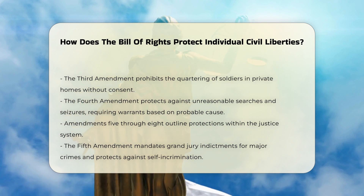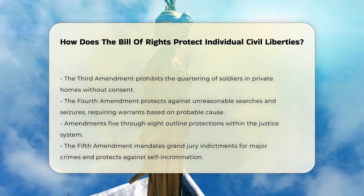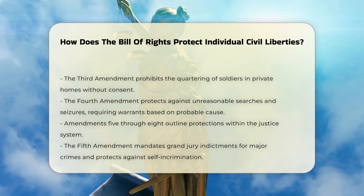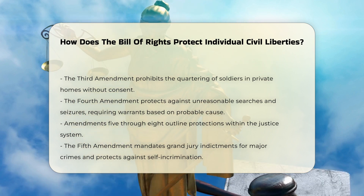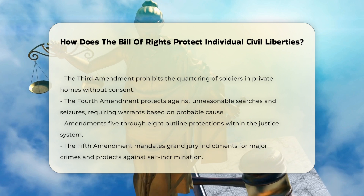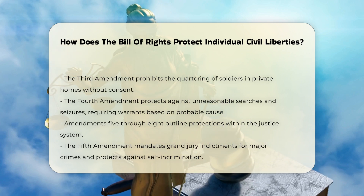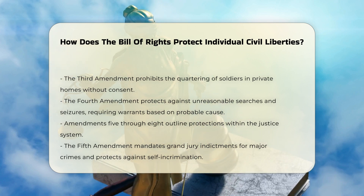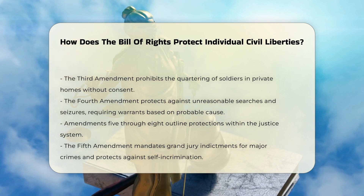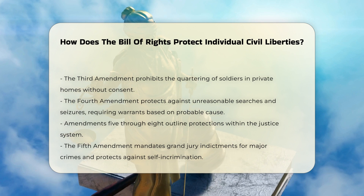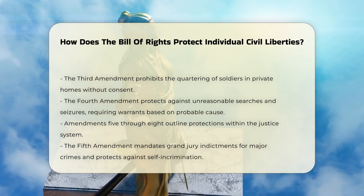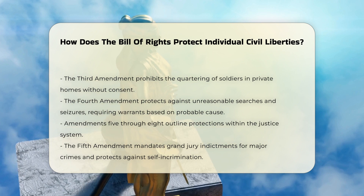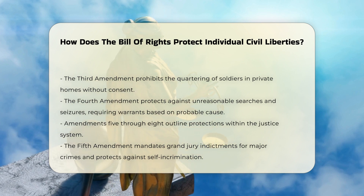The Fifth Amendment also mandates due process of law and just compensation for private property taken for public use. The Sixth Amendment guarantees the right to a speedy and public trial by an impartial jury, the right to be informed of the charges, to confront witnesses, and to have the assistance of counsel.